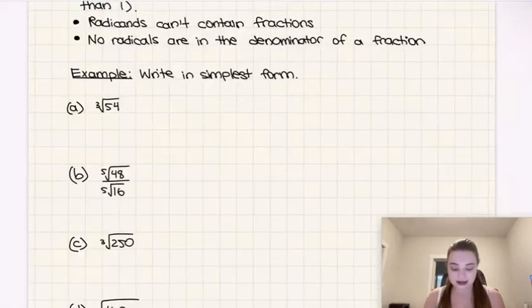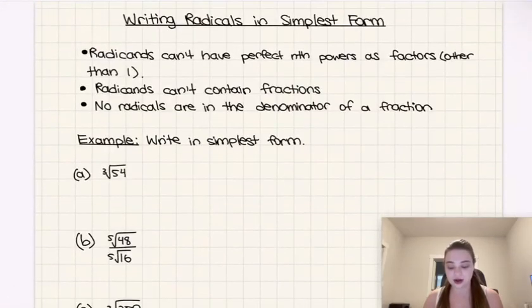And then the last one is that no radicals are in the denominator of a fraction. And so we might need to take top and bottom to a power or something like that in order to combat this, depending on the situation. And we'll get into that in a little bit.